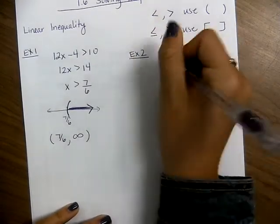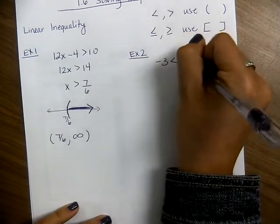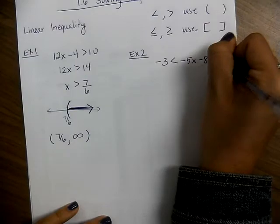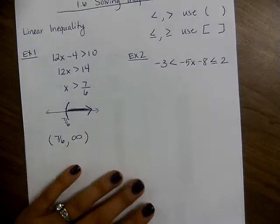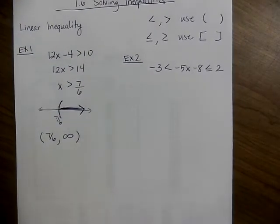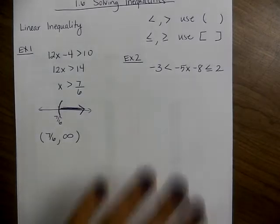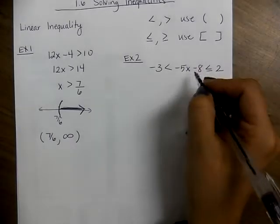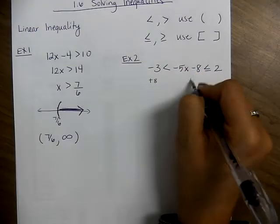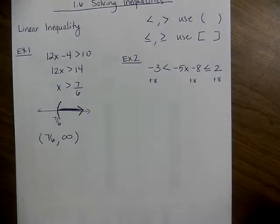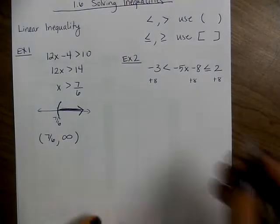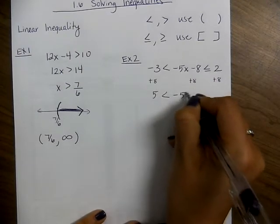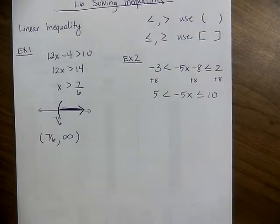Let's do another one — a double inequality. Negative 3 is less than negative 5x minus 8, which is less than or equal to 2. With a double inequality, you have to work on all sides. When we add 8, we add it on the left, in the middle, and on the right, to get x by itself. We get 5 is less than negative 5x, which is less than or equal to 10.